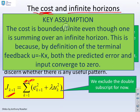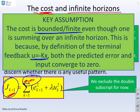The key thing to start is to say this cost is bounded or finite, even though we're summing up over an infinite horizon. The reason we know this is because, by definition, the terminal feedback u equals minus kx tells us that we have convergent errors and convergent inputs. This J, which is our cost function, is bounded.